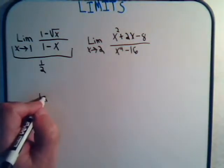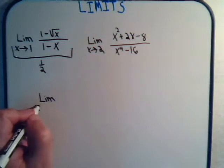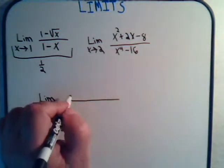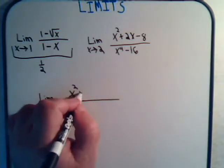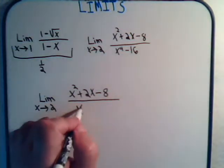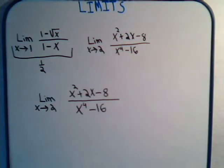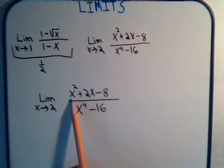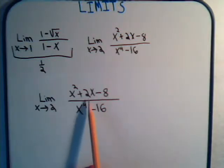For the second problem, we have the limit as x approaches 2 of x squared plus 2x minus 8 divided by x to the 4th minus 16. If we just plug in 2, the denominator gives us 16 minus 16, which is 0. And the numerator gives us 4 plus 4 minus 8, also 0. So we get that 0 over 0 again.